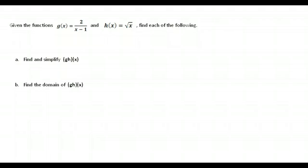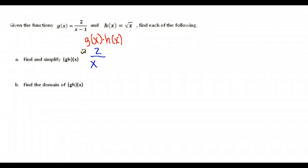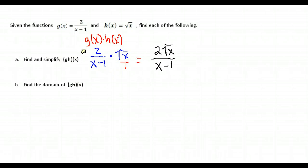Here is our last question. g of x is 2 over x minus 1 and h of x is the square root of x. We're asked to find g times h, so we take g of x times h of x. g of x is 2 over x minus 1 and h of x is the square root of x. Multiplying, we put the square root of x over 1 and multiply numerator times numerator, denominator times denominator, giving us 2 times the square root of x over x minus 1. That's as simplified as it gets — you can't cancel x's because one's in a root and the other is part of a subtracted term.